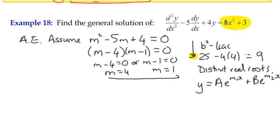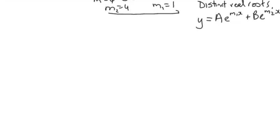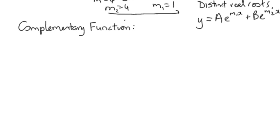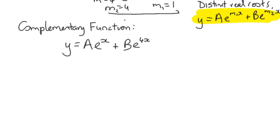We've got constant terms A and B. What would normally be our general solution we're now going to call the complementary function. Substituting m₁ = 1 and m₂ = 4, the complementary function is: y = A·e^x + B·e^(4x). We'll keep that and we're going to see it in the final answer.